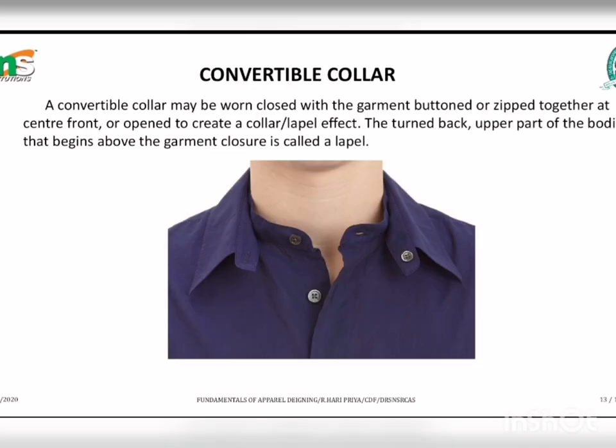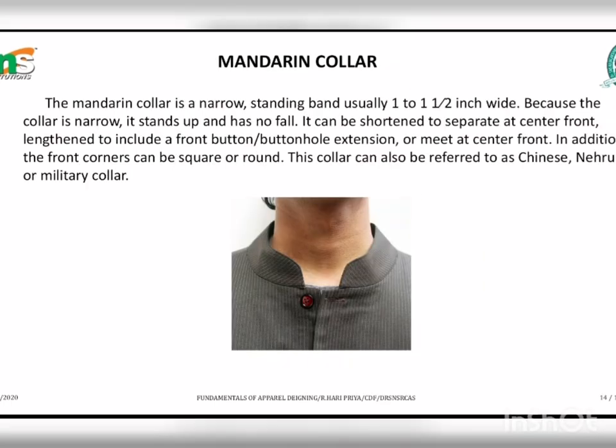Next, the convertible collar. A convertible collar may be worn closed — with the garment buttoned or zipped together at center front — or open, to create a collar or lapel effect. The turned-back upper part of the bodice that begins above the garment closure is called a lapel.